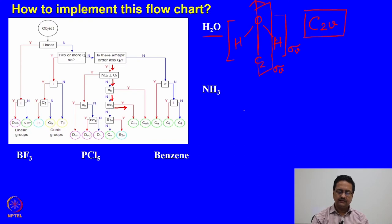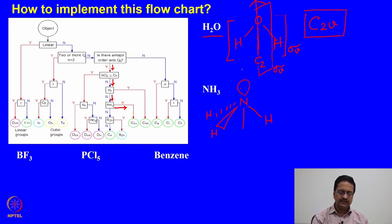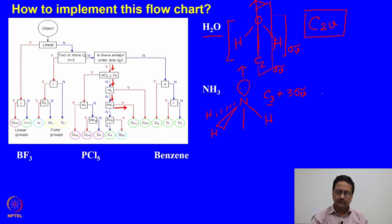Now if we try to find out the point group of ammonia, it should be very simple. Ammonia is a pyramidal shaped molecule with a lone pair, and in the previous class we understood that it has a C3 and 3 σv's. It is very similar to water; the only difference is that it has a C3 axis. So the point group of this molecule should be C3v.